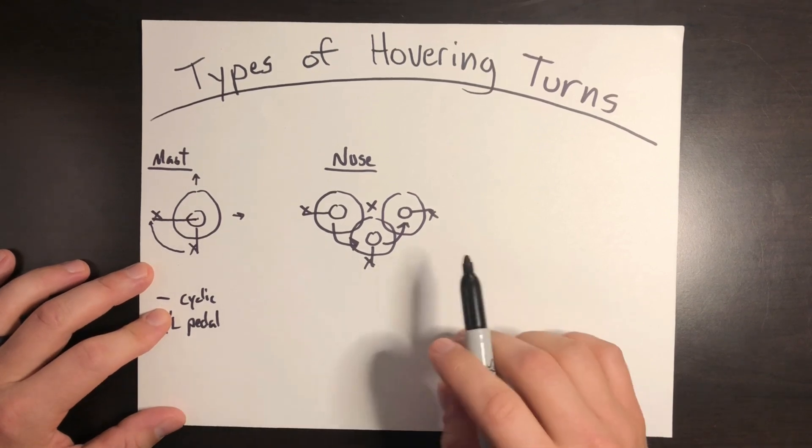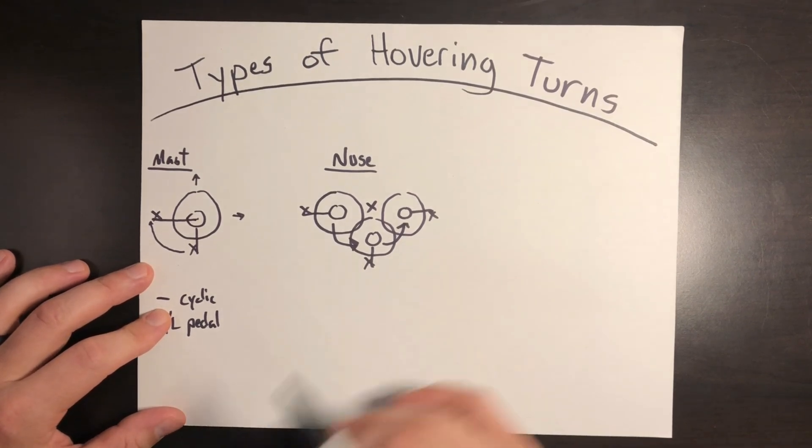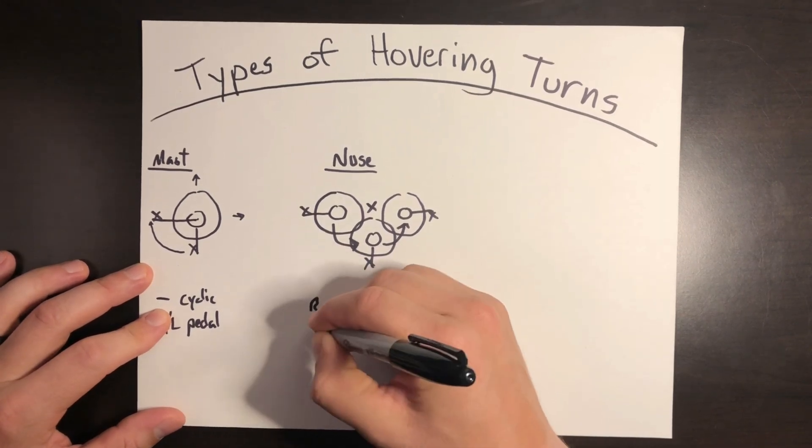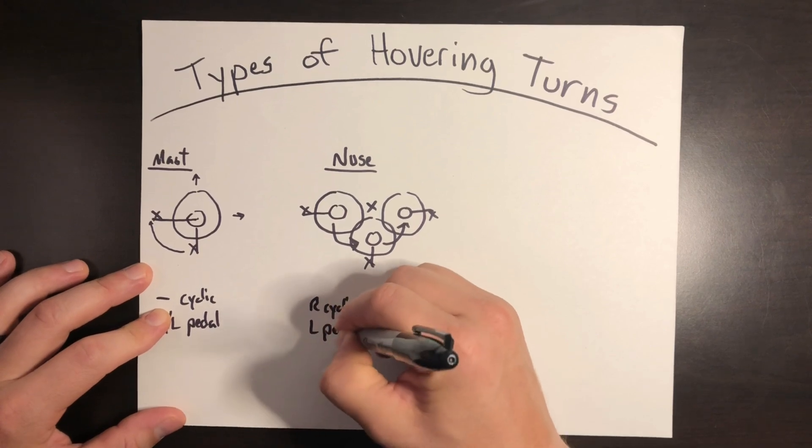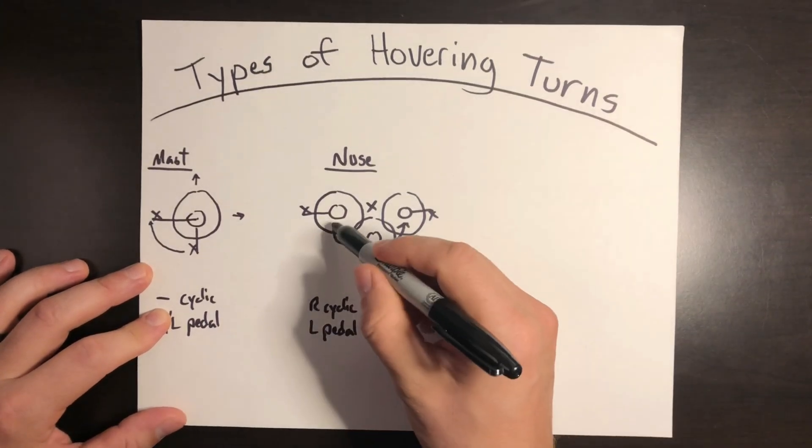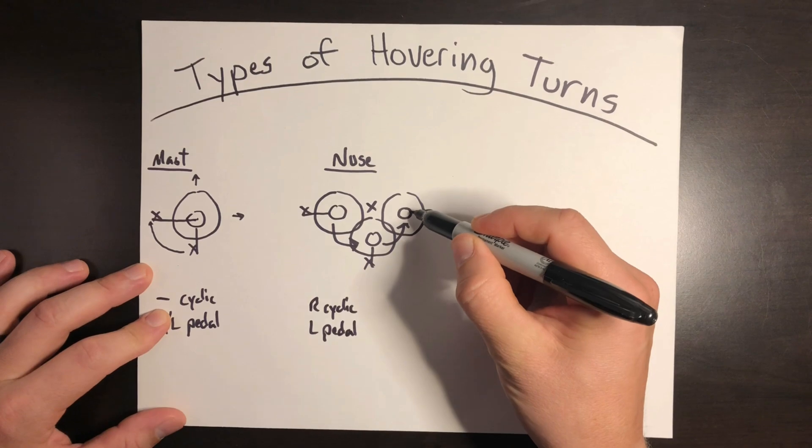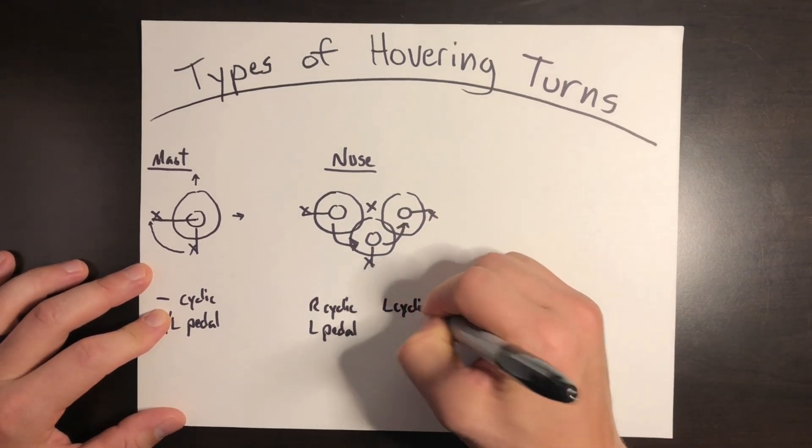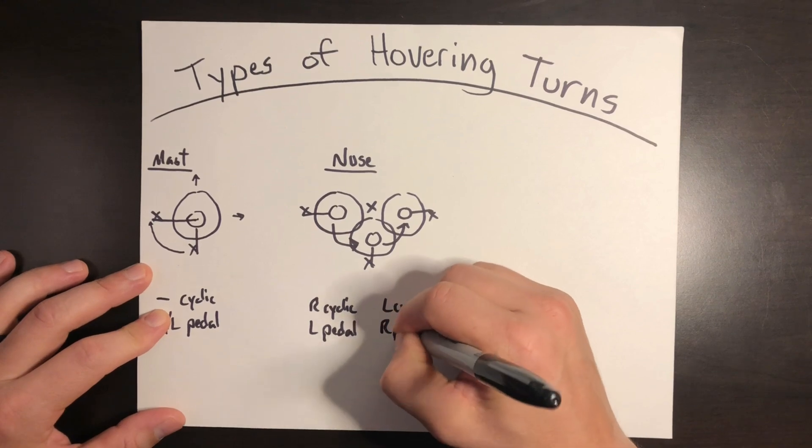The entire helicopter pivots around that nose. To do this, you're going to need opposing cyclic and pedal inputs. That is right cyclic with left pedal or left cyclic with right pedal. So right cyclic, left pedal for a counterclockwise rotation. Whereas if I do left cyclic and right pedal, it's going to be the reverse.